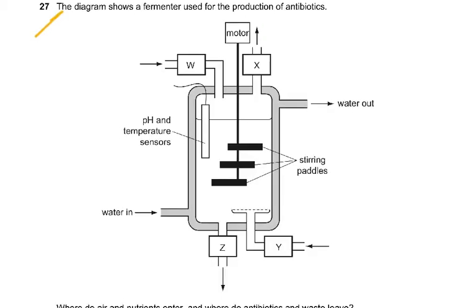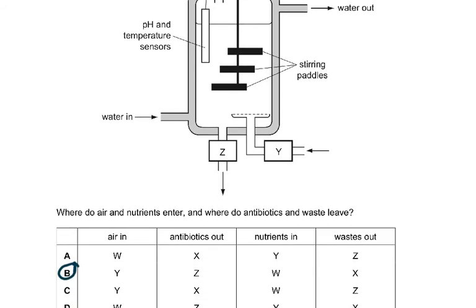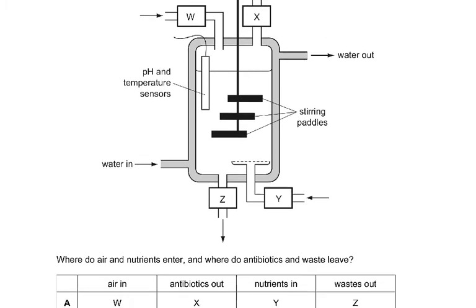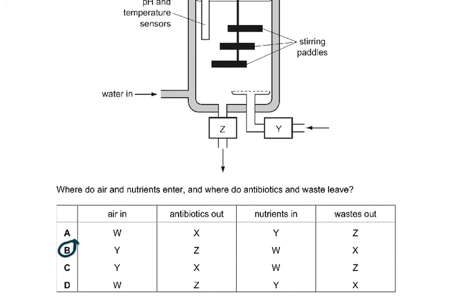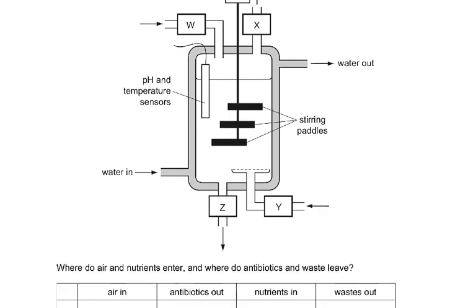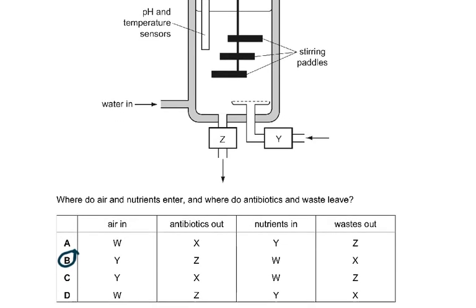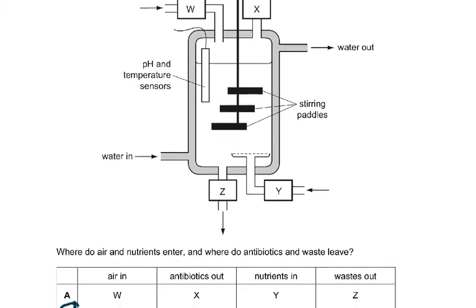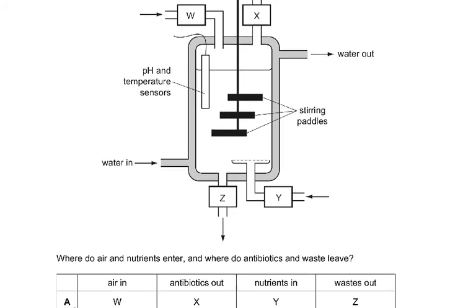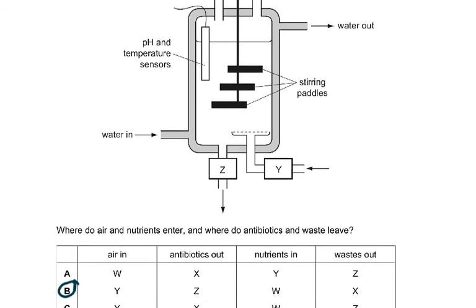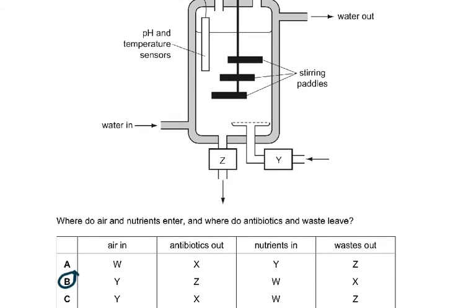Question 27: the diagram shows a fermenter used in the production of antibiotics. Water out, water in, stirring paddles. Where do air and nutrients enter and where do antibiotics and waste leave? You're given choices of W, X, Y, Z. W was nutrients in because there's just a plain pipe which goes into it. Why had to be air, because you see this is the thing which has got these holes in it.